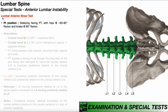In this video, we're going to be discussing the anterior shear test, which is a special test used in the assessment of anterior lumbar instability. To begin, the patient is going to be positioned in sidelying, facing the PT, with their hips at approximately 60 to 90 degrees of flexion and their knees at 90 degrees of flexion.